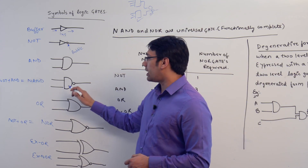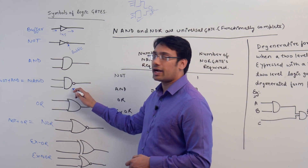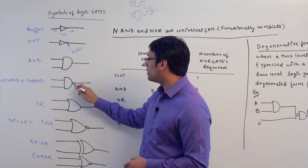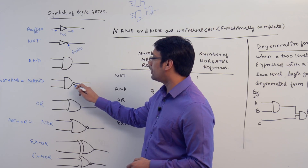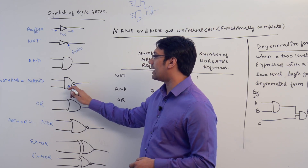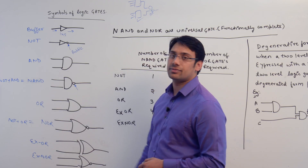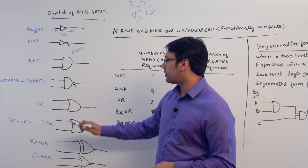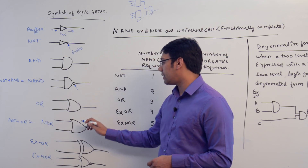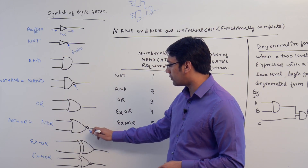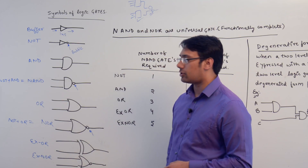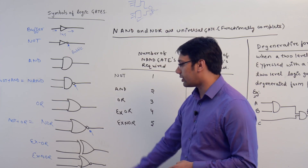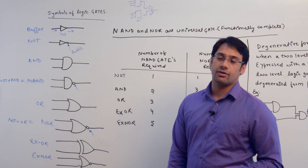Then we have the AND gate. If you add a small bubble in front of the AND gate, it becomes a NAND gate. Then you have an OR gate, and if you add a small bubble in front of the OR gate, it becomes a NOR gate. You also have an XOR gate and an XNOR gate. I have already discussed the truth tables of these particular gates.